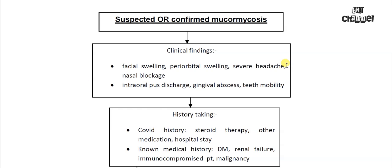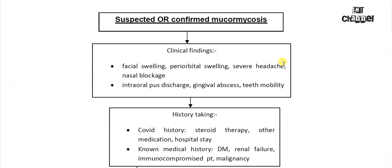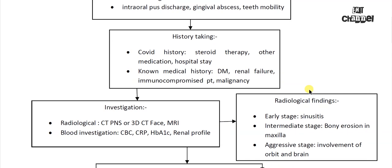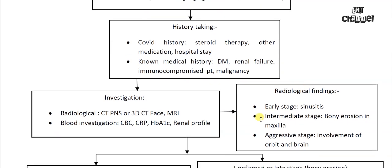...gingival abscess or loose teeth, and he has a background history of recent COVID and has been treated with heavy dose steroids or admitted in hospital, and might have an underlying immunocompromised state — diabetes, renal failure, malignancy, etc. — then you should strongly suspect mucormycosis in all such cases.